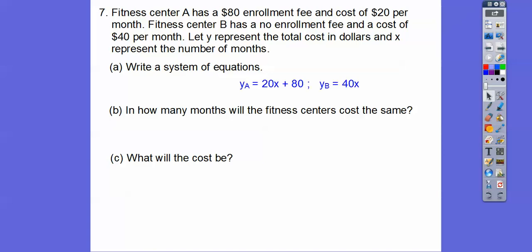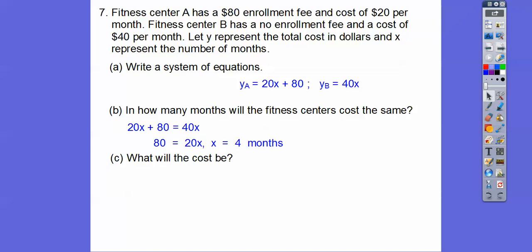The equation for fitness center A: it has an $80 enrollment fee and $20 per month, so 20x plus 80. Center B has no enrollment fee, so 40x. How many months will the fitness centers cost the same? That's when these two equations equal each other — set them equal, subtract 20x from both sides, and 20x equals 80, so x equals 4 — that's 4 months. What will the cost be? Plug in 4 into either equation — 40 times 4 is $160. That's the cost after 4 months.